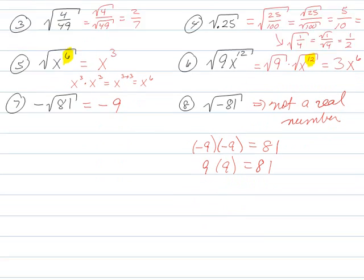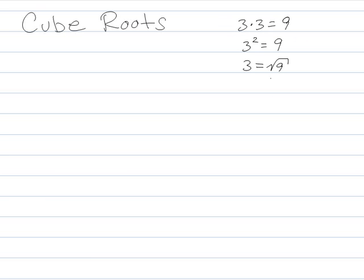Now in addition to square roots, we can also find cube roots. And hopefully you're somewhat familiar with these. But it's like square roots, but with cubes. So like with the square root, we would say, okay, well, three times three was nine. So that meant that three squared was nine. So alternatively, I could take the square root of nine and say that was equal to three.